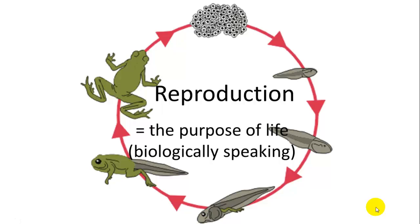We're talking about reproduction, the birds and the bees, if you will. If you haven't had that talk with your parents, this probably isn't a good substitute, so I would call them immediately and ask them about it. But in the meantime, we will speak of reproduction, biologically speaking, which is the purpose of life: to have your genes represented in the next generation.